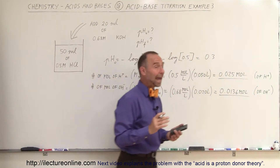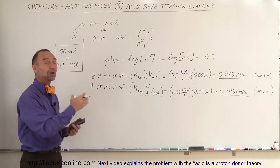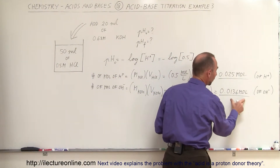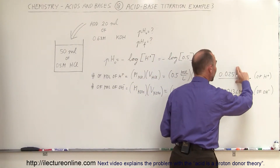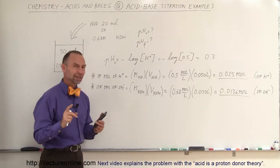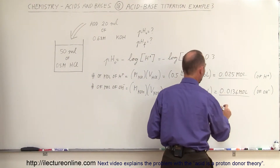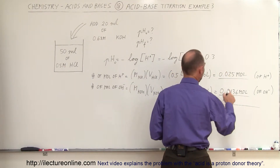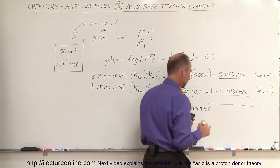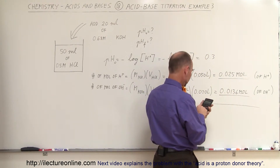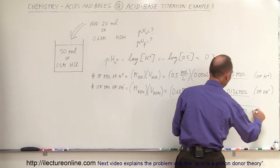We can see that we're adding fewer hydroxide ions (0.0136 mol) than the hydrogen ions already present (0.025 mol). The hydroxide ions will cancel out an equivalent number of hydrogen ions by combining to form water, and the leftover hydrogen ions will remain. Since there are more hydrogen ions than hydroxide ions, the final solution is still acidic. The remaining moles of hydrogen ions equal 0.025 minus 0.0136, which gives 0.0114 moles.